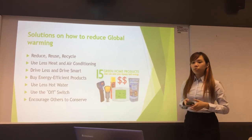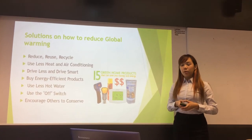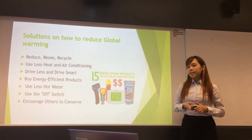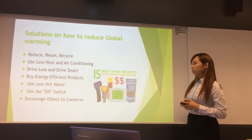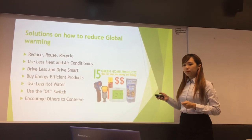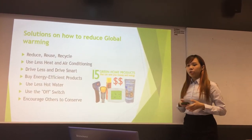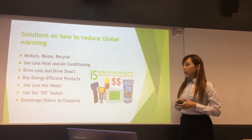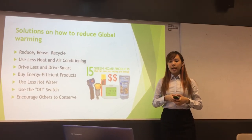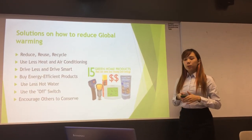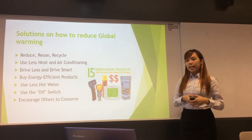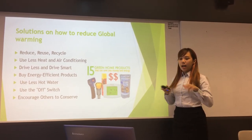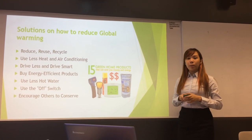Here are solutions on how to reduce global warming. We can perform the three R's: reduce, reuse, and recycle. We can use less heat by using less air conditioning, and drive less and drive smart to reduce carbon fuels produced by vehicles. We can also buy energy-efficient products to save money and energy, and turn off switches when not in use. Last but not least, we can encourage others to conserve, as everyone has a part to play in taking care of our planet.